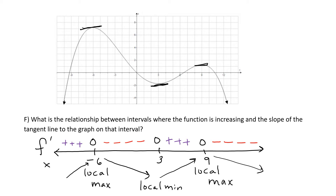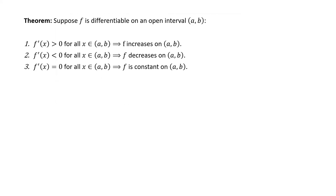This understanding sets the groundwork for our first derivative test. Theorem: suppose f is differentiable on an open interval (a, b). First, if the derivative is positive for all x in that interval, then the function increases on that interval — we illustrated that in the previous graph. Second, if the derivative is negative for all x in that interval, then the function decreases on that interval. Finally, if the derivative equals 0, the function is constant — we get a horizontal tangent line.